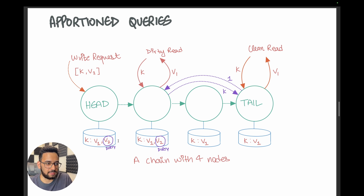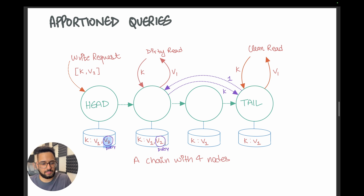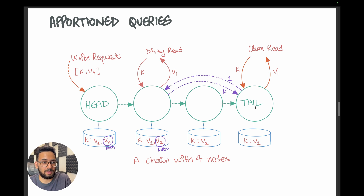Whenever a write request for a key initially comes in, its first version is always marked clean. When we receive an update to a key — say a second version V2 for key K — we append this latest version to the version list for this object. If the node is not the tail node, we mark this version as dirty and propagate the write down to the successor. The tail is responsible for marking its own version as clean, and once committed, it notifies all other nodes that it has applied that version — so the other nodes should also mark their versions as clean.